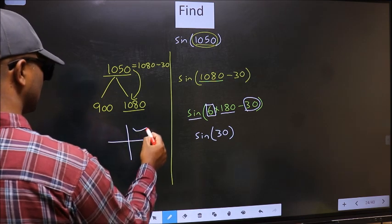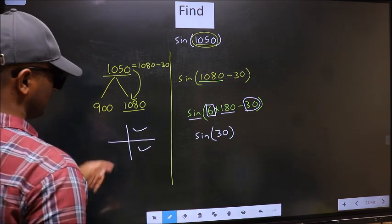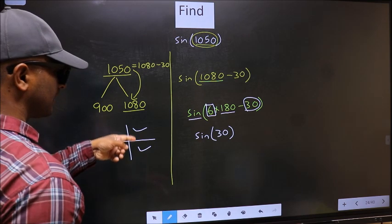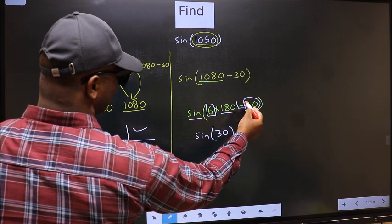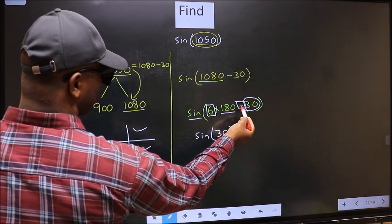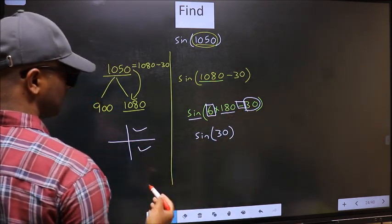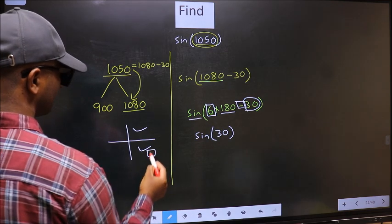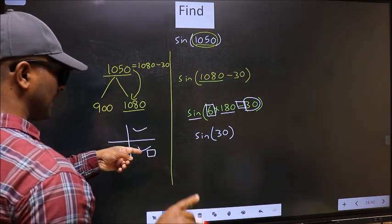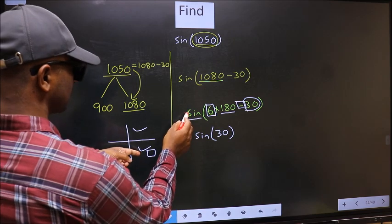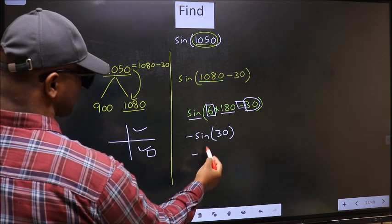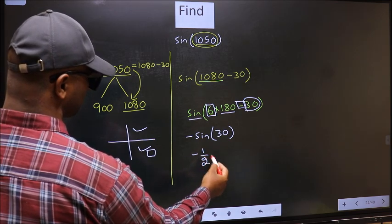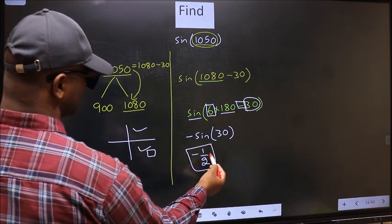So now to select the quadrant we should look at this symbol. Here we have negative, that means the angle lies in the fourth quadrant. And in the fourth quadrant, sin is negative. So we should put negative. So negative sin 30 is -1/2. This is our answer.